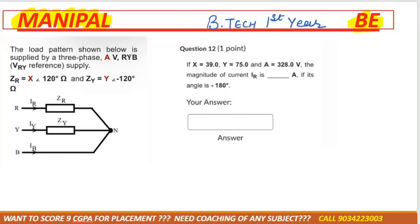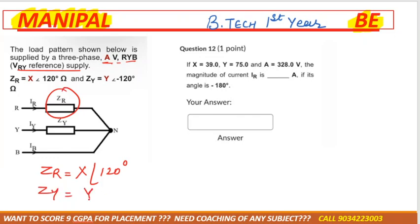A load pattern supplied by a three-phase source with voltages RYB where Y is the reference. The impedance ZR = X ∠120°, ZY = Y ∠−30°, and ZB is not given. A line voltage is also mentioned. This is a star connection case.